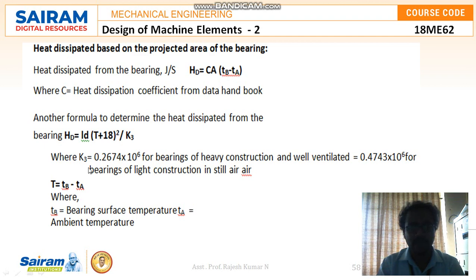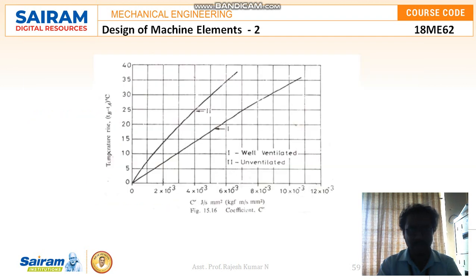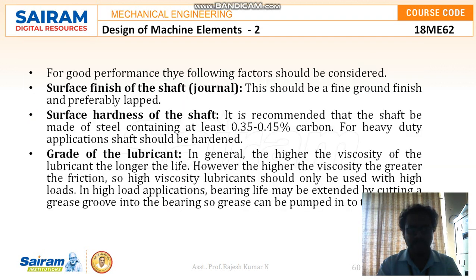The K3 value can be taken for two conditions: for well-ventilated and air-conditioned bearings. For heavy construction well-ventilated bearings, K3 = 0.2674 × 10⁶, and for light construction in normal air, K3 = 0.4347 × 10⁶. Here T is TB minus TA, where TB is the bearing surface temperature and TA is the ambient temperature. The explanation of this graph was already covered in the previous video.